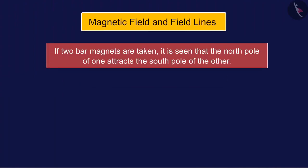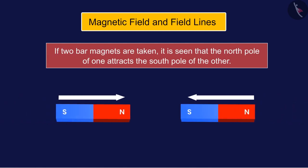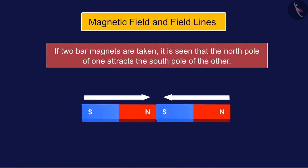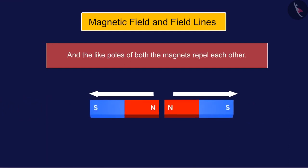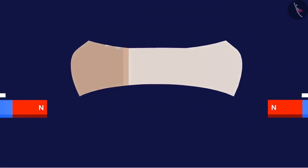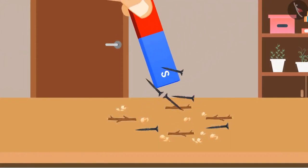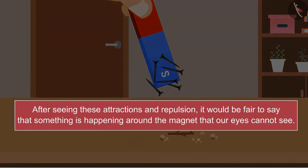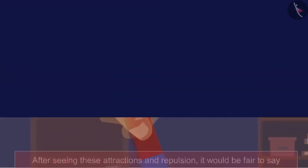If two bar magnets are taken, the north pole of one attracts the south pole of the other, and the like poles repel each other. We know that magnets attract iron but not wood. After seeing these attractions and repulsions, it would be fair to say that something is happening around the magnet that our eyes cannot see.